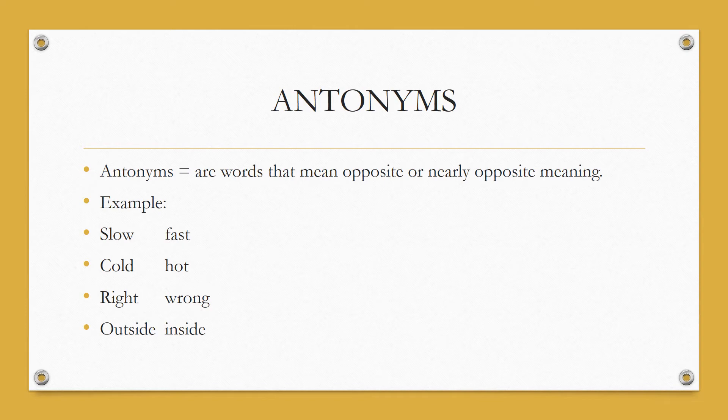Now antonyms are words that mean opposite or nearly opposite meaning. For example, slow - the snail is slow, the cheetah is fast. Cold and hot - winter is cold, summer is hot. Right, wrong - if your answer is correct it means it's right. If you got it wrong, thumbs down. Outside, inside, back, front, up, down. Antonyms are opposite words.